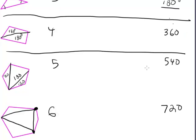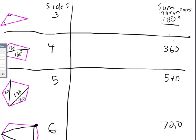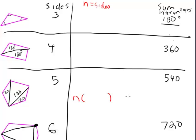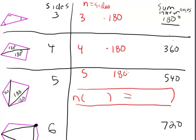One thing you might notice is that for each additional side we go up by 180 degrees. We're looking for a formula that relates sides — normally called n — to the total degrees. We have: n=3 gives 180, n=4 gives 360, n=5 gives 540. Three times 180 does not equal 180, and four times 180 does not equal 360, but there is a pattern involving these numbers.